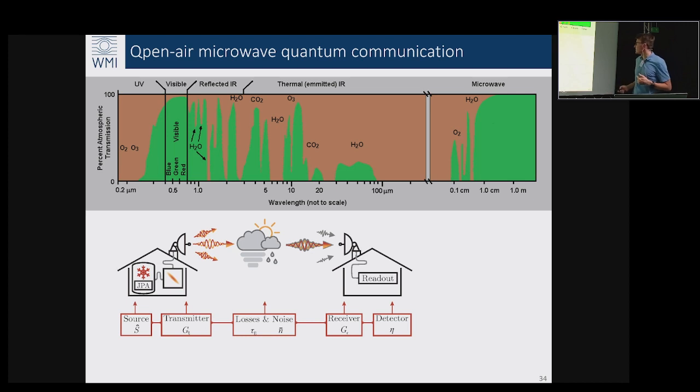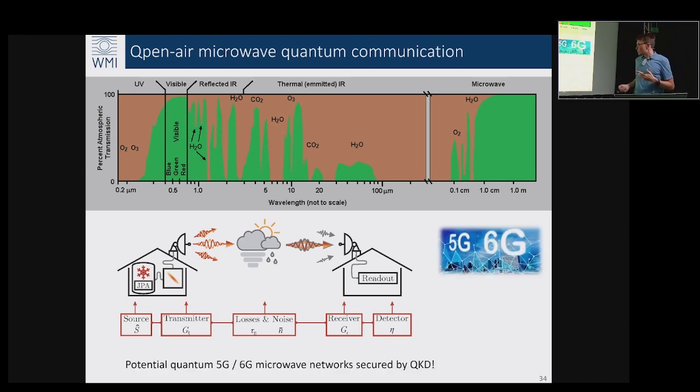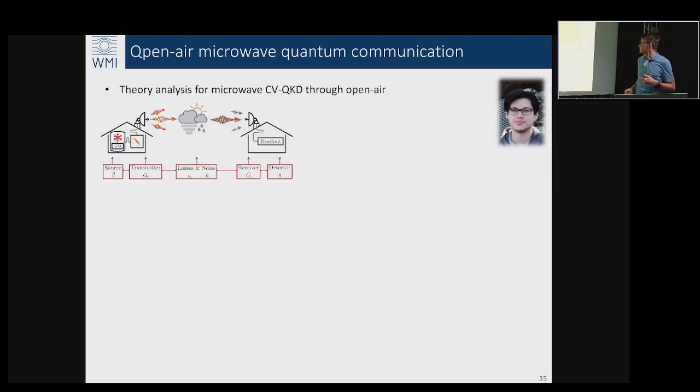We can have some fridges here for generation and readout of microwave quantum signals but here we would consider open air scenario at the frequency of 5 GHz. The good thing for us which was exciting is this frequency range is exactly compatible with 5G and 6G networks, so we were thinking can we secure them by the QKD physics.